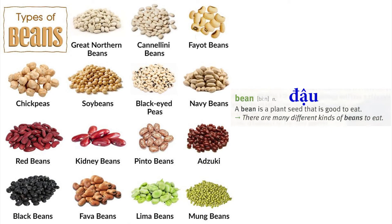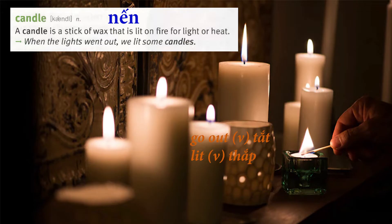Bean: A bean is a plant seed that is good to eat. There are many different kinds of beans to eat. Candle: A candle is a stick of wax that is lit on fire for light or heat. When the lights went out, we lit some candles.